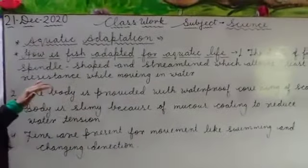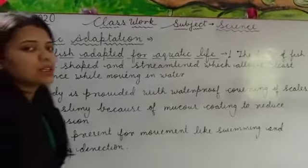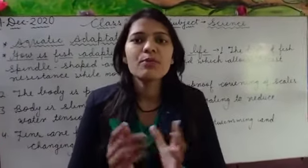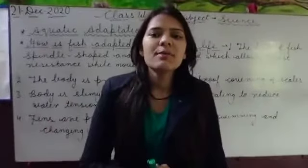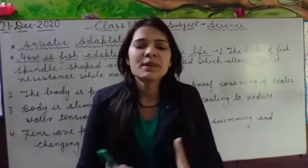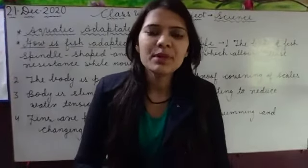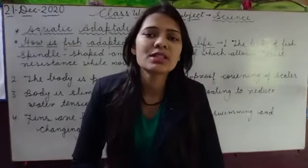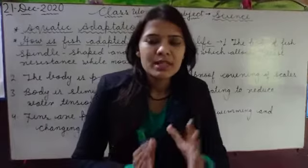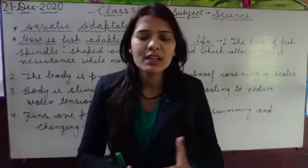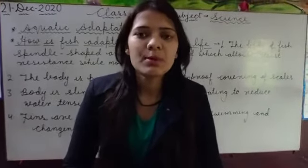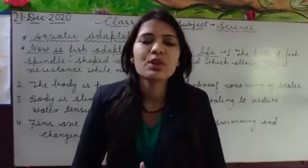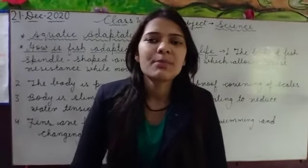The first topic is the body of fish — spindle shape. Spindle shape means the middle portion is broad and wide, and it tapers towards the tail and neck. Because of this shape, the body is balanced, and it is necessary to have a streamlined body so that the fish does not face resistance while moving through water.